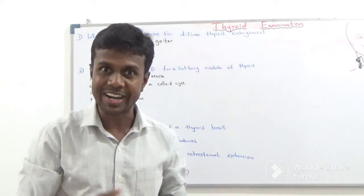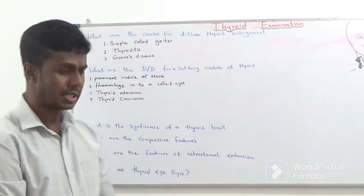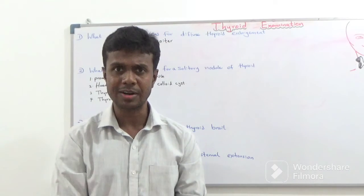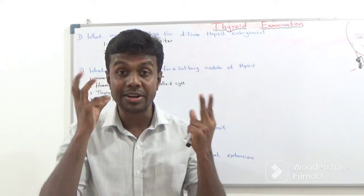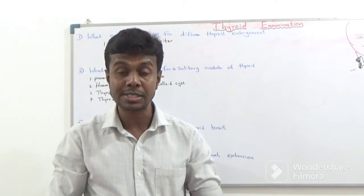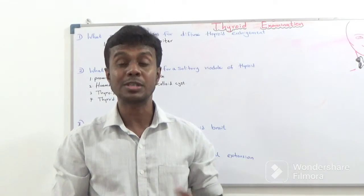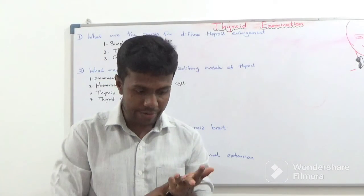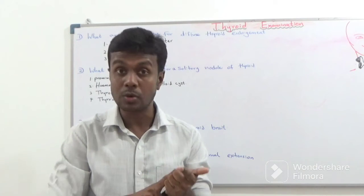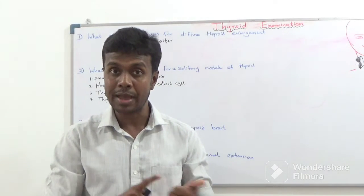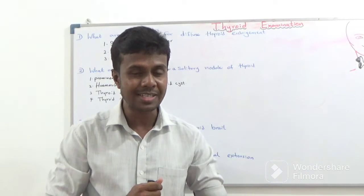What are thyroid eye signs? Lid lag, lid retraction, exophthalmos, proptosis, and ophthalmoplegia. Those are the thyroid eye signs.